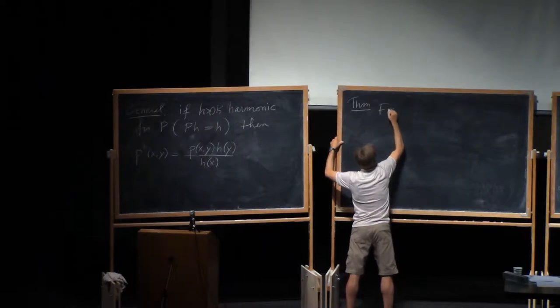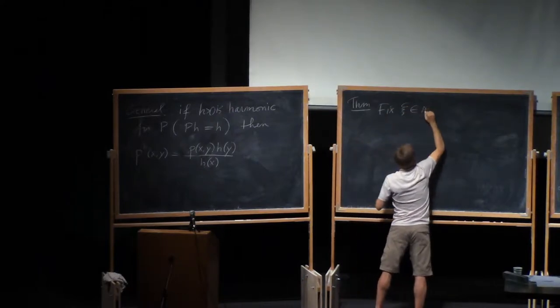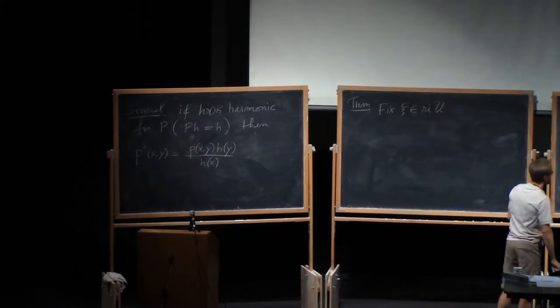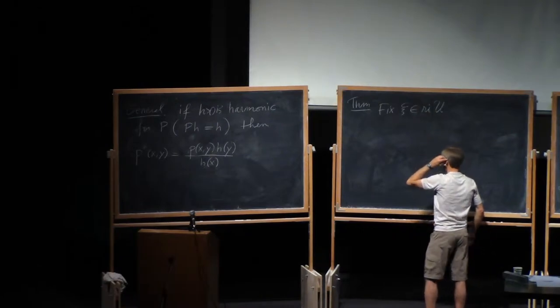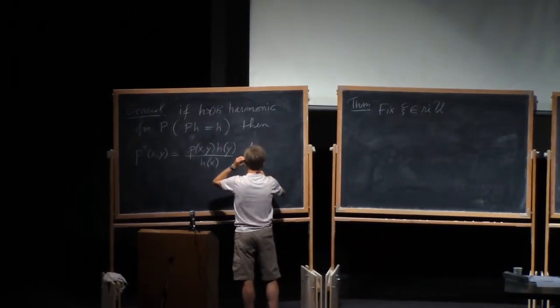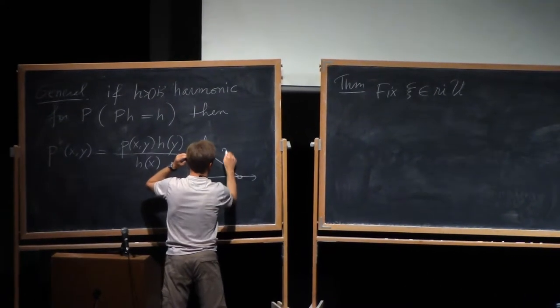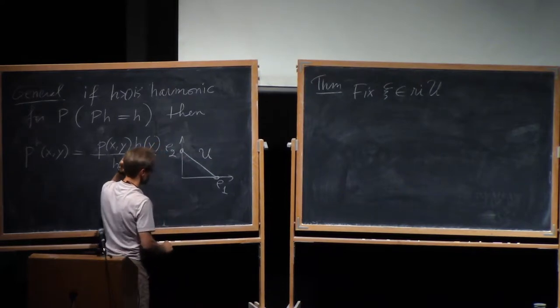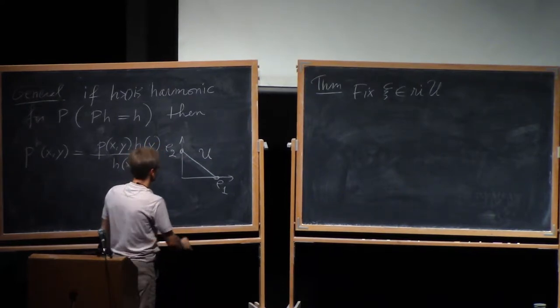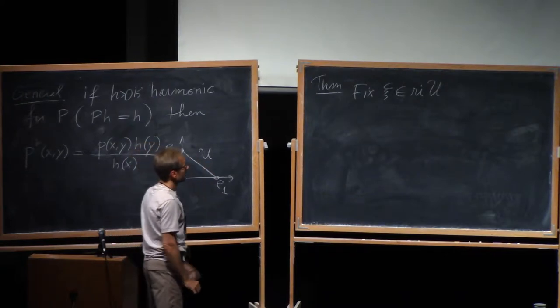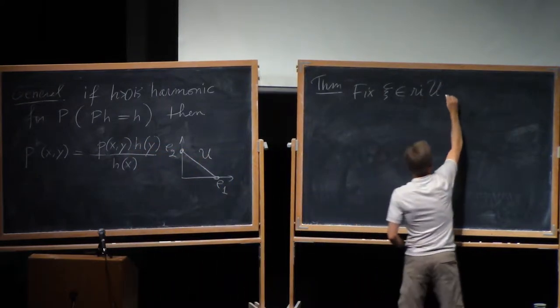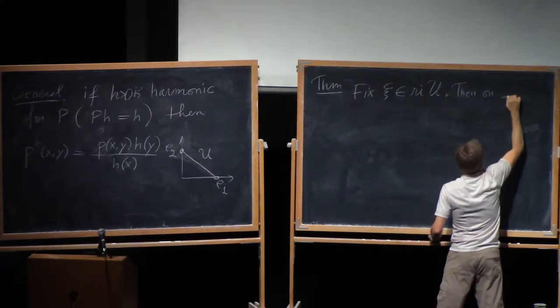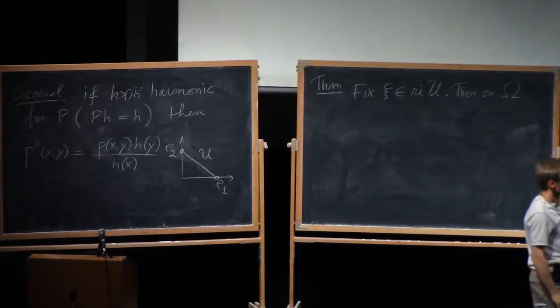So fix now at C, which is one of the admissible velocities, but not one of the endpoints. So I wrote relative interior of U. So the picture was this again. U was the simplex where all the legitimate asymptotic velocities lie. And relative interior is all of it except the endpoints. So fix one of the Cs.